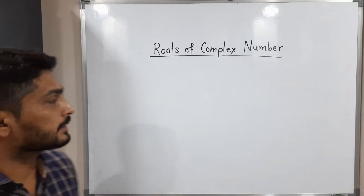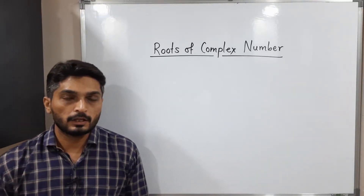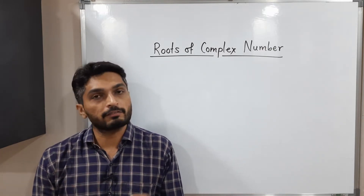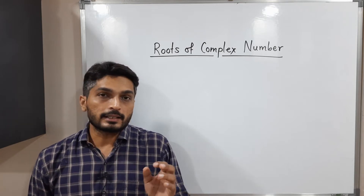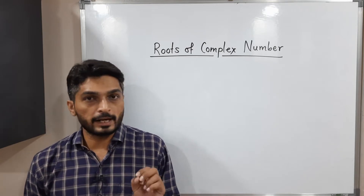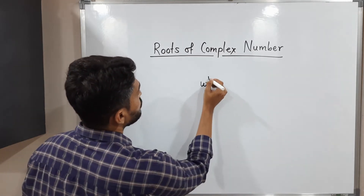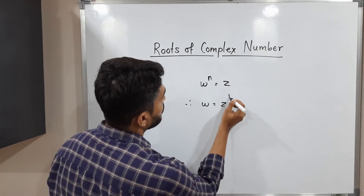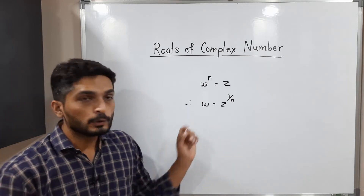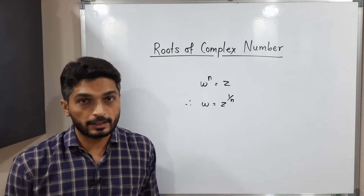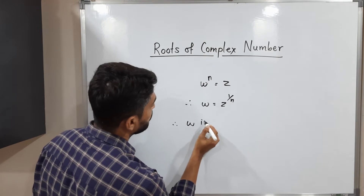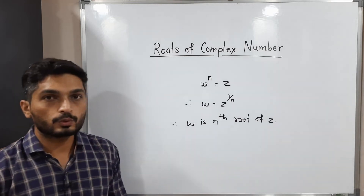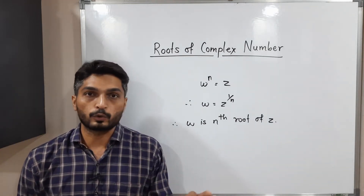Hi everyone, let us discuss the concept of roots of complex numbers. We are already familiar with square root, cube root, and fourth root. Similarly, we have nth root — we can find the nth root of any complex number. Consider two complex numbers Z and W having the relation W raised to n is equal to Z. So if you take the nth root of both sides, W is equal to Z raised to one by n. That means W is the nth root of Z.